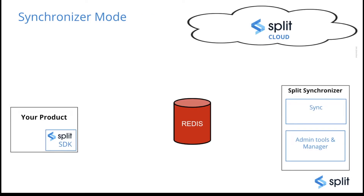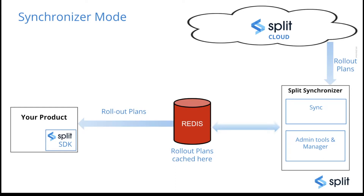Here is the architecture for synchronizer mode. You have the product including the Split SDK, the Redis database, and the Split Synchronizer, all running inside your network, along with Split cloud. When the synchronizer process starts, it syncs up with Split cloud, fetches all the rollout plans — meaning the split definitions and segments — and stores them into the Redis database. Once the SDK starts, it reads all the keys from Redis that correspond to the org and is ready for the get treatment call.